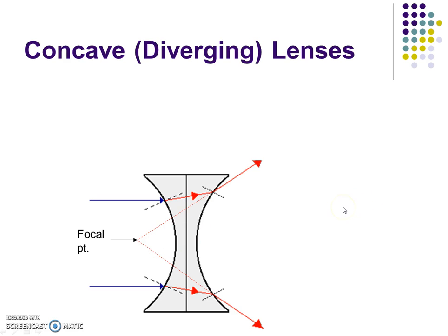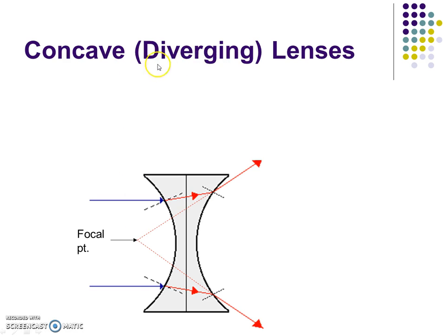Our third diagram is a diverging lens — this is the one where the lens is thin in the middle and thicker on the sides, kind of like an hourglass shape. Same idea: as it enters the new material the rays are going to bend, but in this case they'll bend away from a focal point. So instead of bending towards, they'll bend away — that's diverge, spread out.